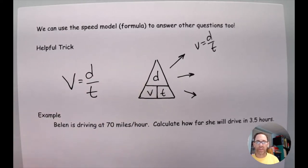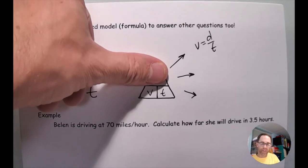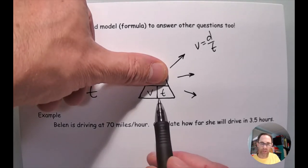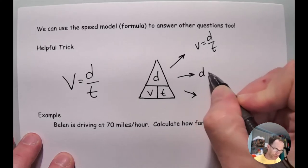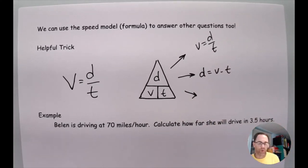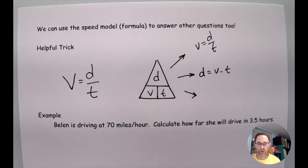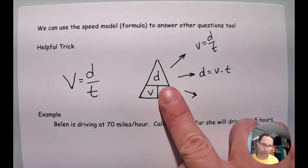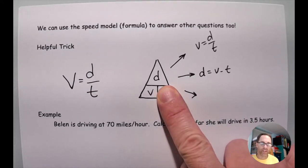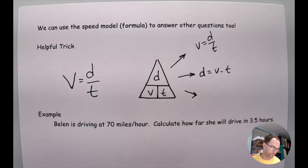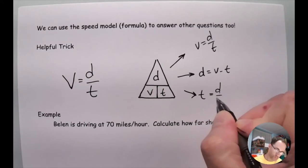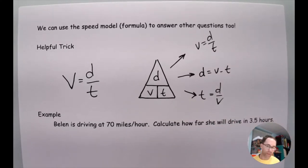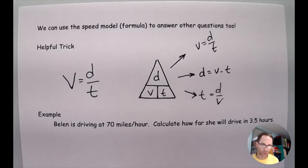If I wanted to find the distance, I cover up D and it shows D equals V times T. This little trick basically does the algebra for us — we just write out the final result. We've solved for V, we solved for D, and last is T: cover up T and the equation is T equals D divided by V. Those are the three versions of the equation.